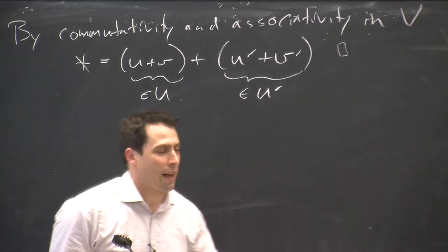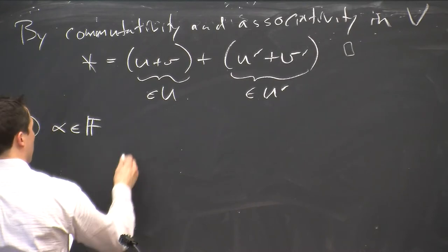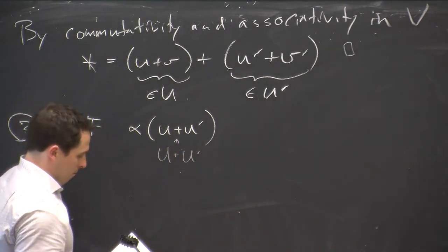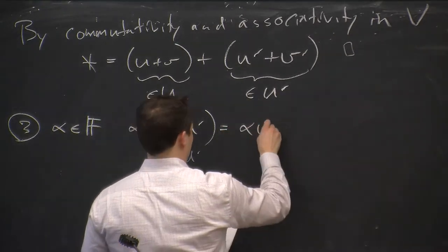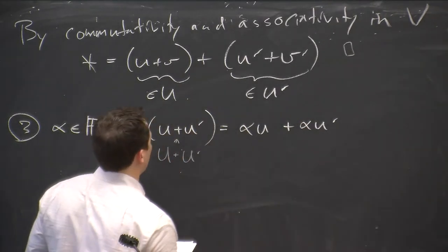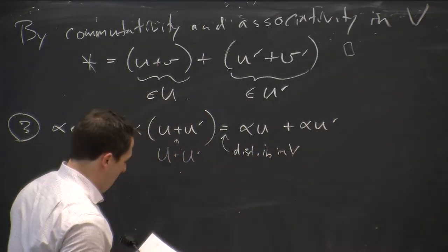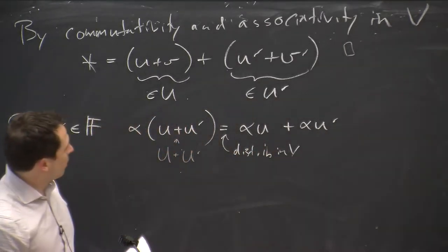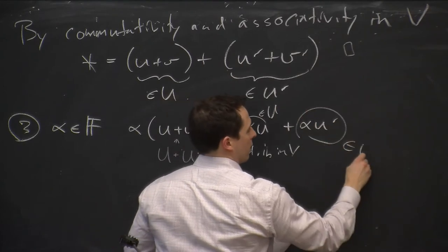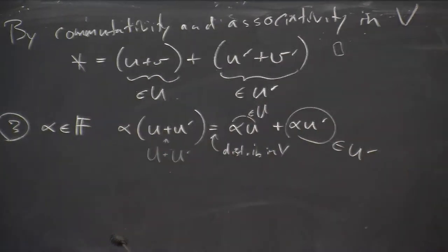We do something similar for scalar multiplication. If alpha is a field element, alpha times (u plus u') — where this is an arbitrary element of big U plus big U' — by the distributive property in V, this equals alpha u plus alpha u'. By closure under scalar multiplication in U, alpha u is in U; by closure in U', alpha u' is in U'. So alpha times this element is written as something in U plus something in U'. Therefore it's closed under scalar multiplication.